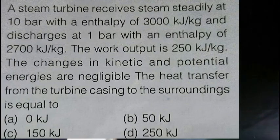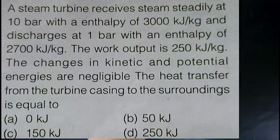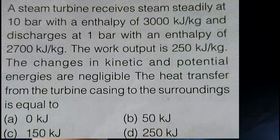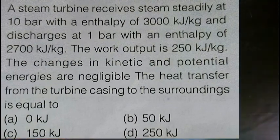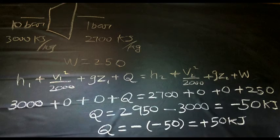In this video we will be discussing problems regarding steady and unsteady flow processes. A steam turbine receives steam steadily at 10 bar — meaning it is a steady flow problem — with an enthalpy of 3000. The discharge is at 1 bar with an enthalpy of 2700. The work output is also given. The change in kinetic energy and potential energy are negligible. We have to find the heat transfer to the surroundings.